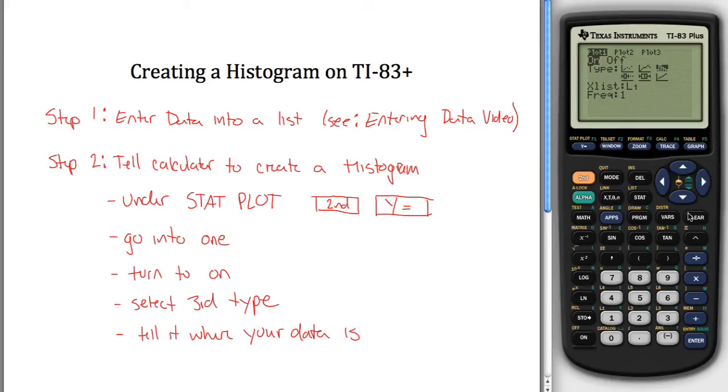Tell it where your data is. It's going to default to say my data is in L1. Suppose it wasn't in L1, suppose it was in L3, well then I'd hit L3 here. I'd highlight it and hit second and then three, L3 pops up. But my data is in L1, so I'm going to hit second and then one, and L1.